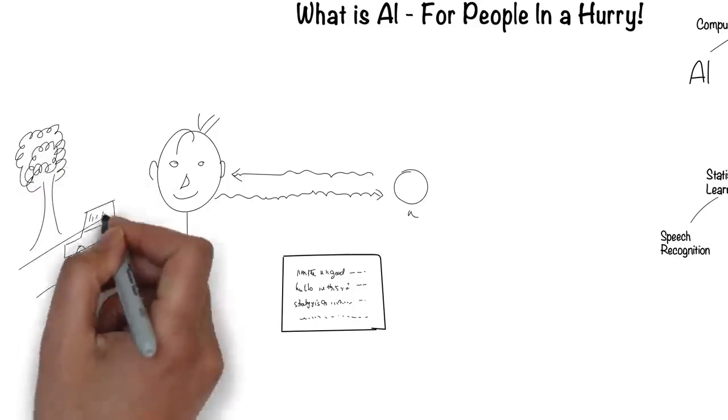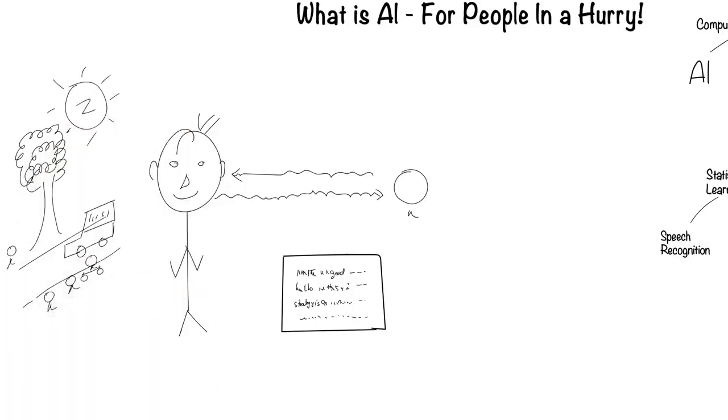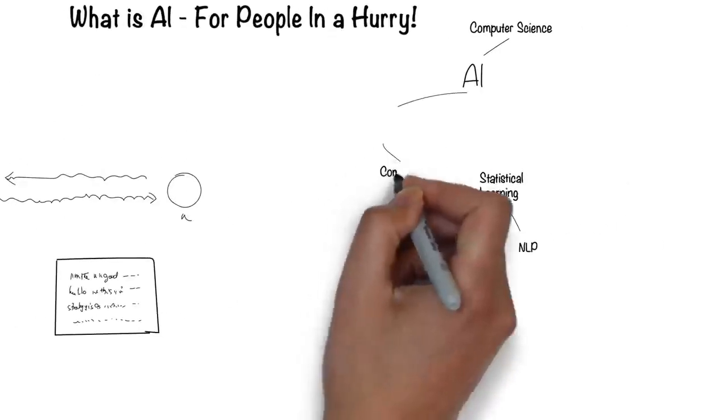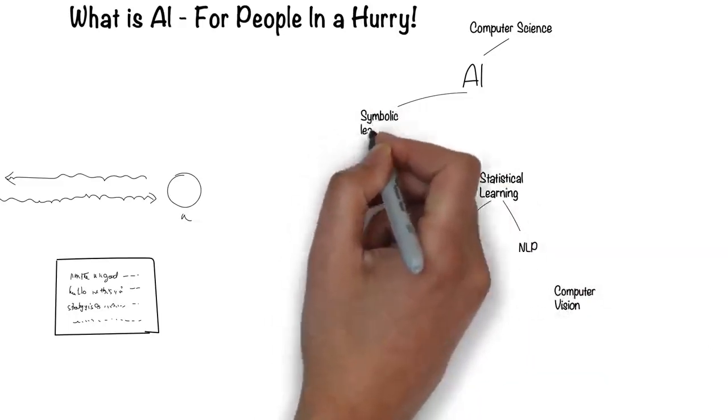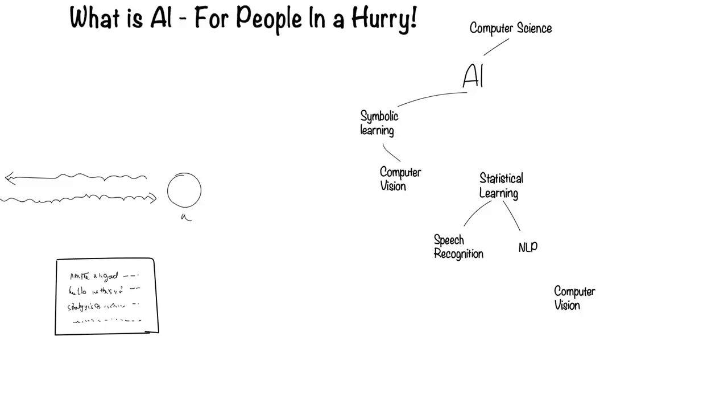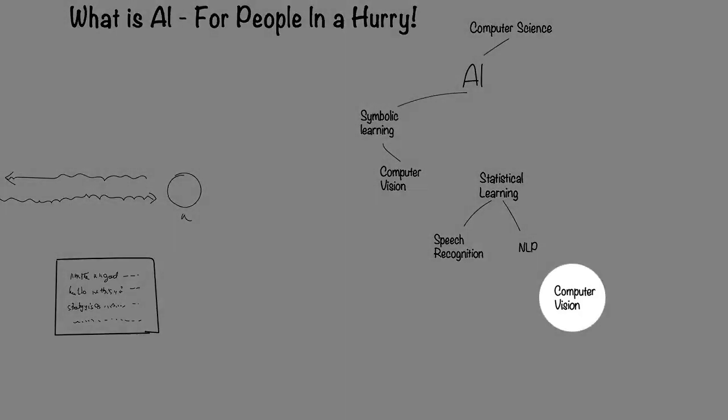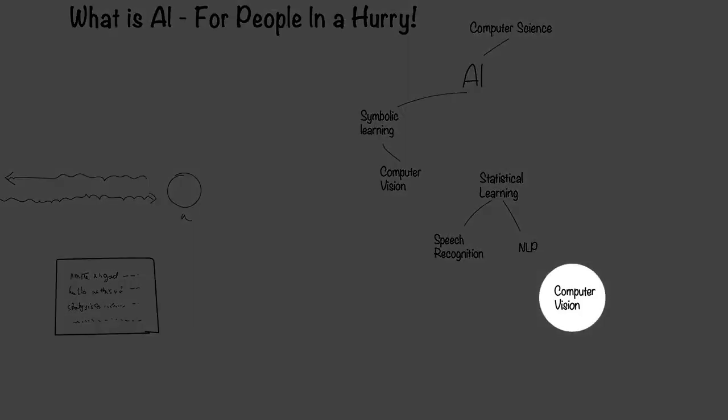Humans can see with their eyes and process what they see. This is the field of computer vision. Computer vision falls under the symbolic way for computers to process information. Recently, there's been another way, which I'll come to later.